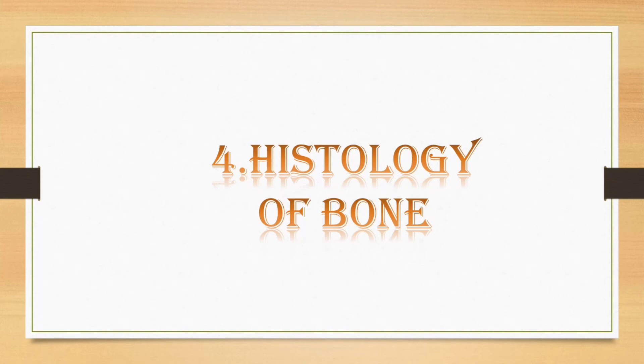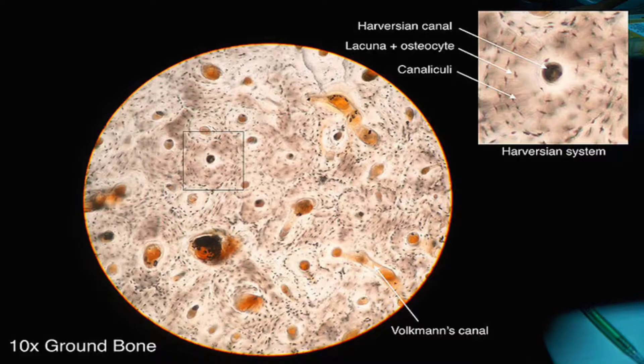Fourth question: histology of bone. For this question, you can draw this diagram and mark Volkmann's canal and the Haversian system containing the Haversian canal and Haversian lamellae, and also the canaliculi.